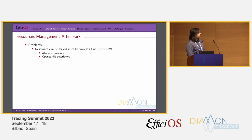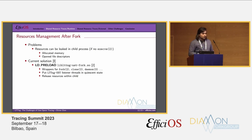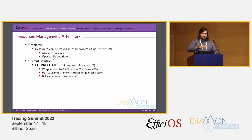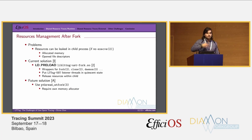There is also resource management after a fork. Resources allocated by the tracer in the application can be leaked in the child process if there is no exec — typically memory and open file descriptors. Our current solution is to use the same LD_PRELOAD wrappers around fork, clone, and other syscalls and libc functions to ensure we free this memory. This is why we need the quiescent state: we need a global picture of what has been allocated in the parent and free it in the child. The future solution for adaptability is to use ptrace_atfork for callbacks on fork, but this requires our own memory allocator as explained earlier.